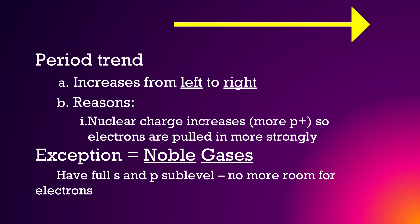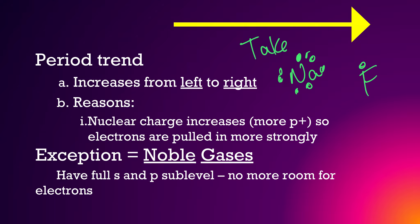Also, remember that electronegativity is the ability to take an electron. Sodium has one valence electron. It would take a whole lot of energy for sodium to gain seven more valence electrons to fulfill its octet. So sodium is going to give up its electron a lot more easily. But fluorine already has seven valence electrons — it just needs one more to complete its octet. So fluorine is going to take that electron much quicker and much more easily than sodium would, because sodium would need seven electrons and fluorine only needs one.